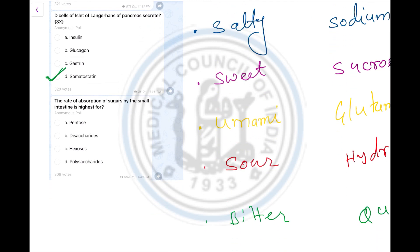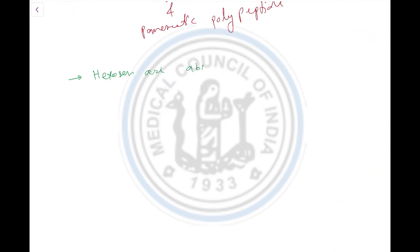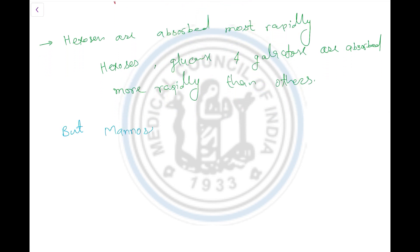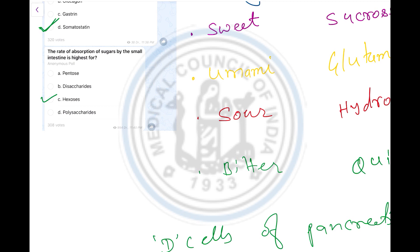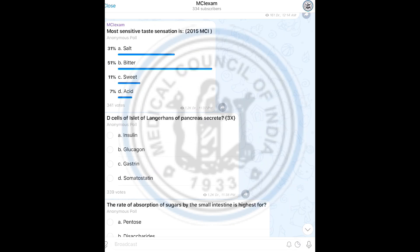Next question: the rate of absorption of sugars by the small intestine is highest for which type? Hexoses are absorbed most rapidly. Among hexoses, glucose and galactose are absorbed more rapidly than others. Pentoses are absorbed more slowly. So the correct answer is hexoses.